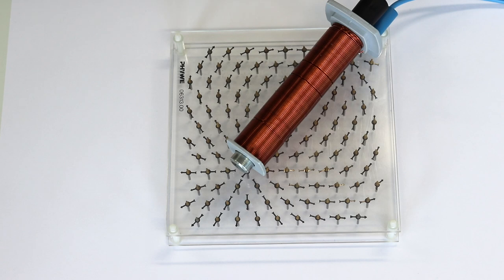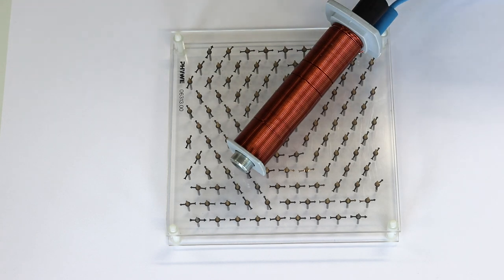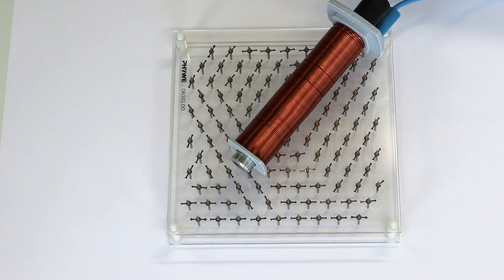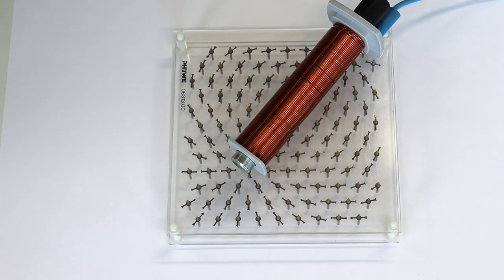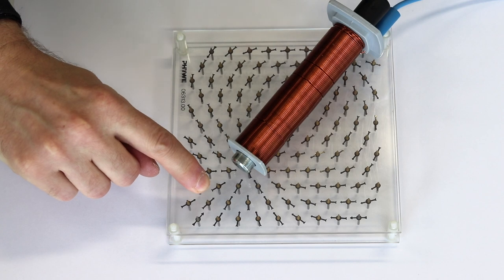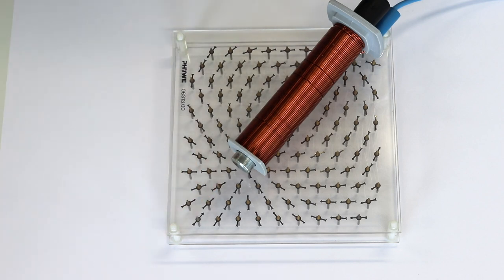I'm going to change the direction of the current through the coil by flipping the two terminals of the power supply. And now when we switch it back on, we have a similar pattern but now the compass needles point towards this end of the coil.